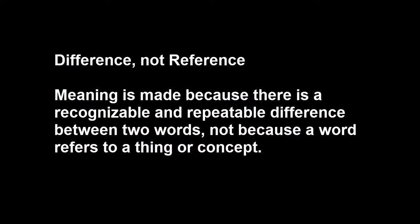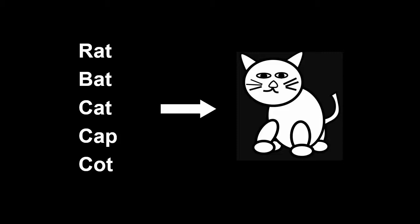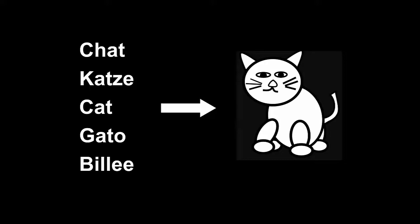But Saussure says that the relationship between the word 'cat' — the sign on the left — and the picture of the cat — the sign on the right — is arbitrary. The word 'cat' has meaning for us because of its difference from other possible signs, because it represents a recognizable and repeatable difference from words like 'bat,' 'rat,' 'cap,' or 'cot.' And if a community decided to call that image on the right something like 'cot,' 'cot' would work just as well as 'cat.' We can demonstrate that by noting that if we travel to France, this will become 'le chat.' If we go to Spain, it's 'el gato.' And if we see one of these in India, it might be 'bili' — at least I hope that's the right way to pronounce that word in Hindi.